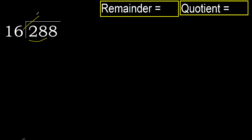16 multiplied by which number is nearest to 28 but not greater? 16 multiplied by 2 is 32, which is greater. Multiplied by 1 is 16. 16 is not greater. Ok, 28 minus 16 is 12.